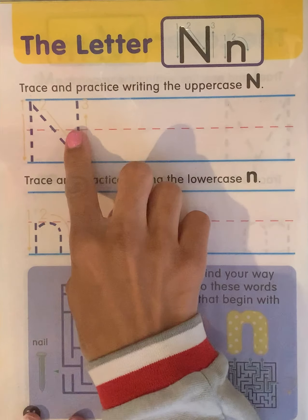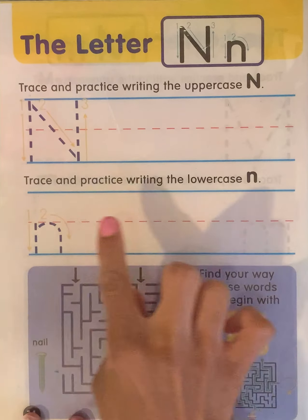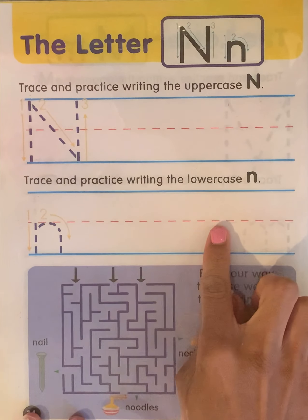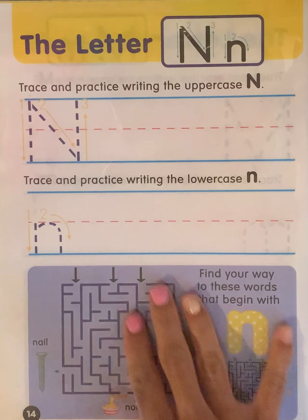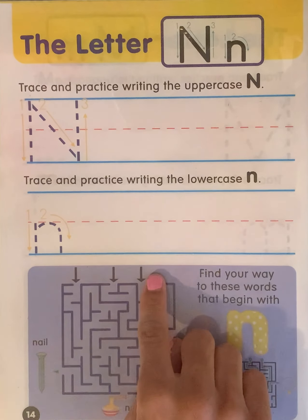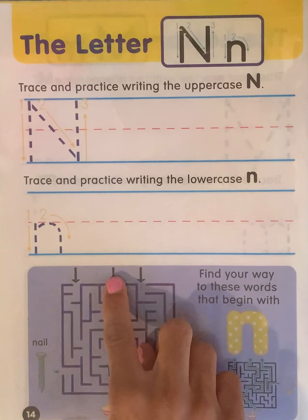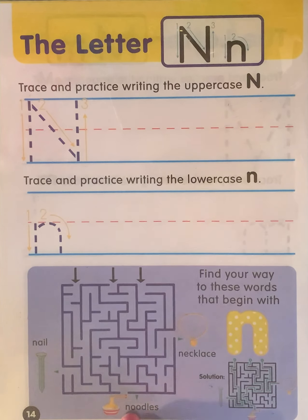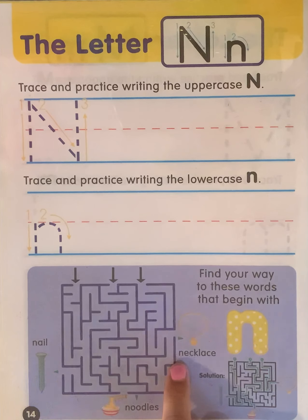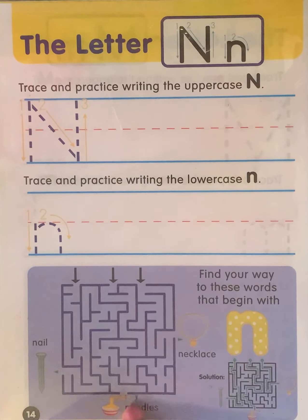Once you are done tracing and writing uppercase N and tracing and writing lowercase N, we are going to go down here and work on this maze. There are three different paths that we have to figure out: one to get to the nail, number two to the noodles, and number three to get to the necklace. And if you see, all of these words begin with the letter N — nail, noodles, and necklace.